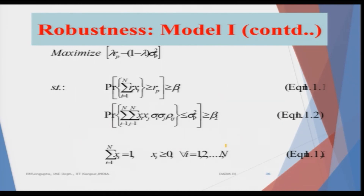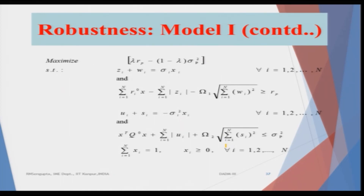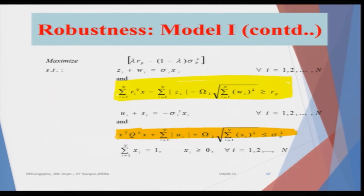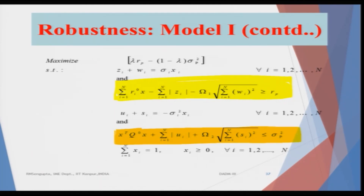The sum of weights equals one and there is no short selling, so all weights must be greater than zero. The first constraint, when converted to a robust counterpart using level β₁, is as shown. The second constraint's robust counterpart at probability level β₂ is also given. We can then solve it using the simulation method and obtain the results.